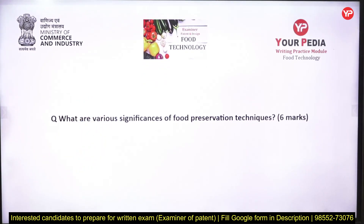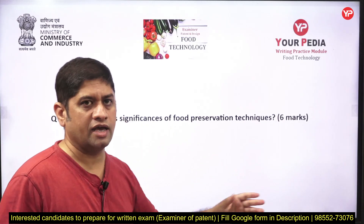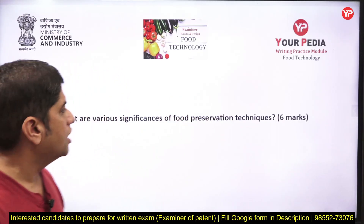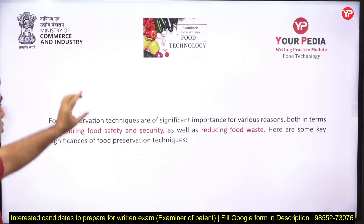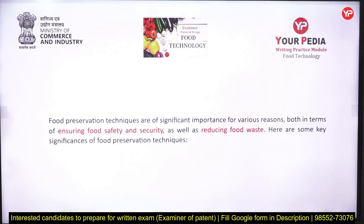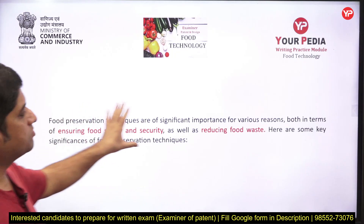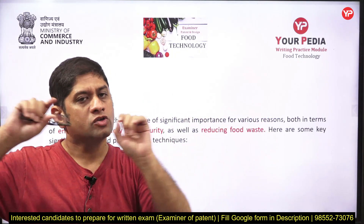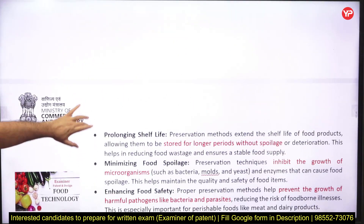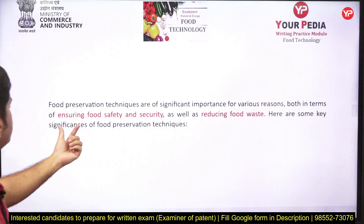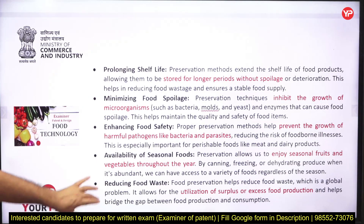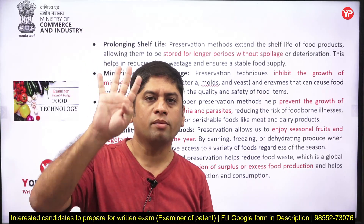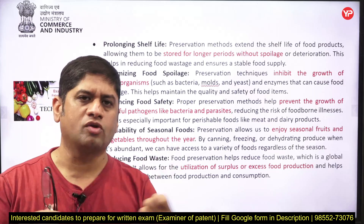A similar question: 'What are the various significances of food preservation techniques?' First, give an introduction line. You can write 'Significance' as a heading and underline it. They are significant and important for various reasons — food safety, security, and reducing food wastage. Then write: 'Here are some key significances of food preservation techniques.' Give numbered or dot-point headings only if you know the exact count; otherwise use dots.